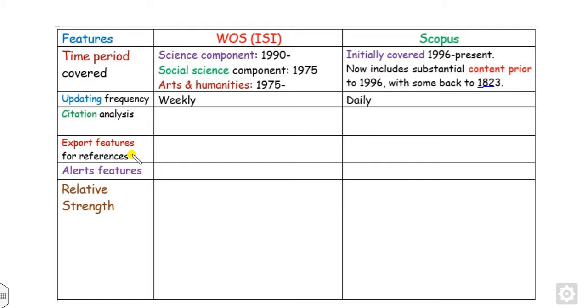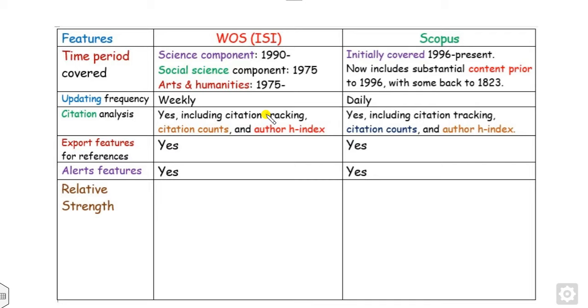You can export features for references and alerts in both cases. For citation analysis, you can check citation counts, author and h-index on the Web of Science platform. You can also check Scopus h-index, Scopus citation and more on the Scopus website.